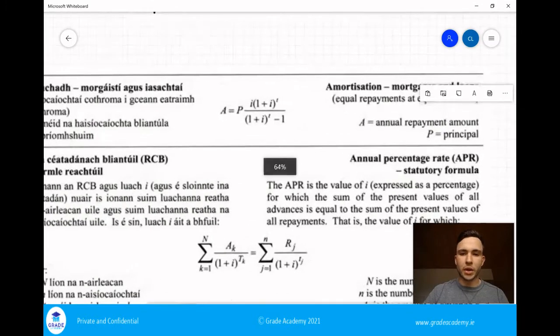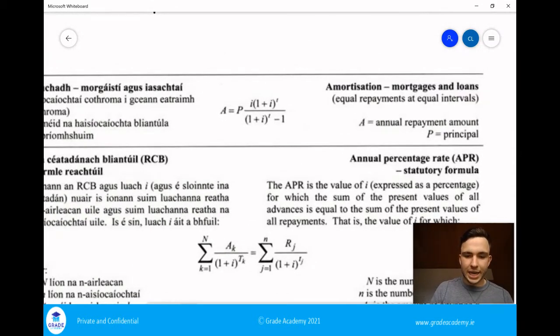So what is the amortization formula? Well, it's this formula here in our log tables, and it is used for repaying back mortgages and loans. Amortization is for paying back mortgages and loans for equal repayments at equal intervals. For example, if you're paying off a set amount every month or every year, we can use this formula.